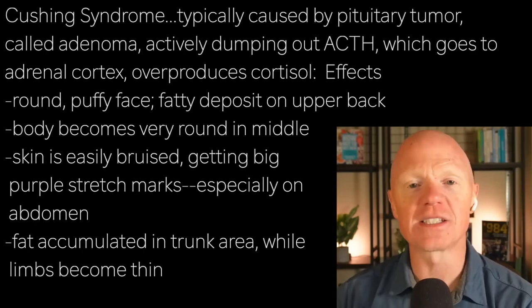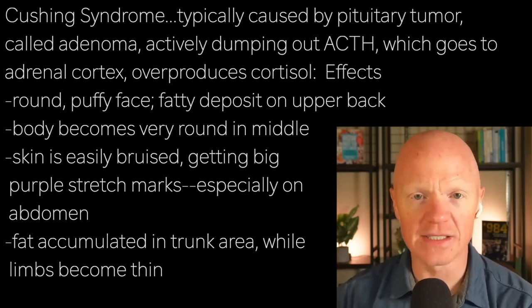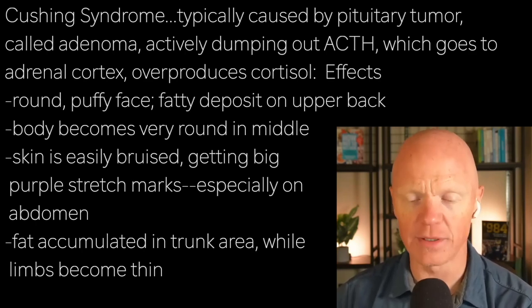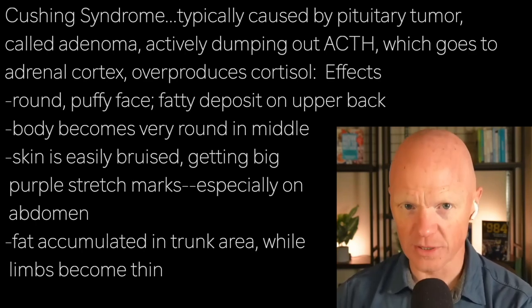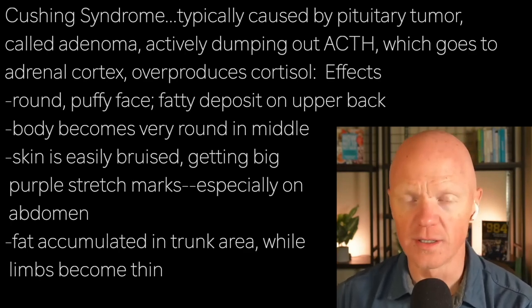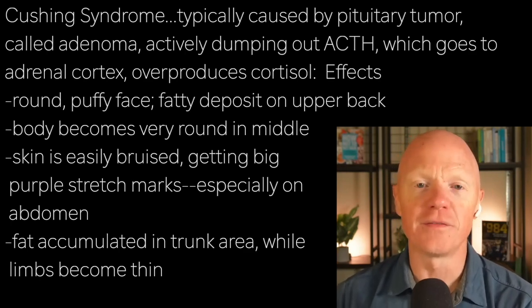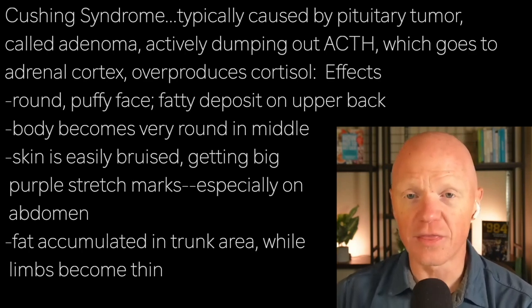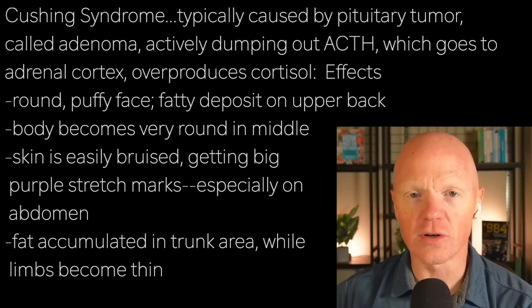This can happen anywhere, but especially on the abdomen where the person is gaining so much weight. Weight gain is rapid and predominantly central, with fat accumulation really occurring on the trunk of the body, while the limbs — like the legs and arms — start to get quite thin. This is a very stark central adiposity.